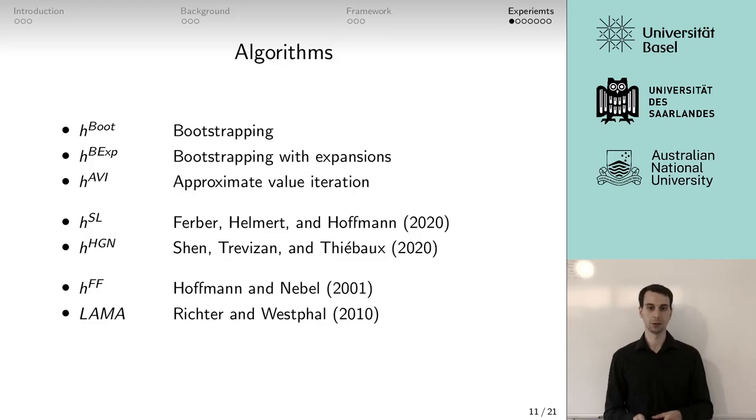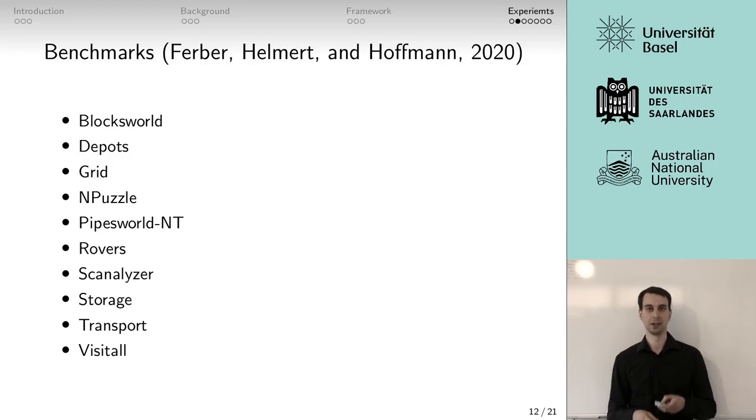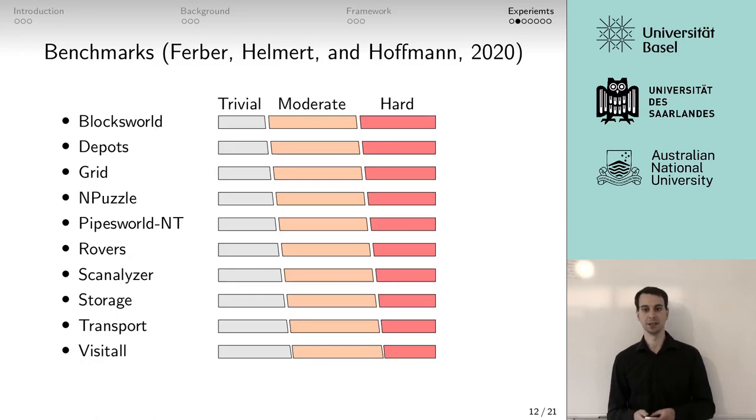In our experiments, we compare our three approaches against the per-instance approach of Ferber et al., which is supervised learning, which is also compared against the hypergraph networks of Chen et al., and compared against greedy best first search using FF heuristic and the first iteration of LAMA. The complete search and evaluations are implemented in C++ using Fast Downward. As domains, we use the same domains that Ferber et al. already used. They split the instances within the domain into three different sets.